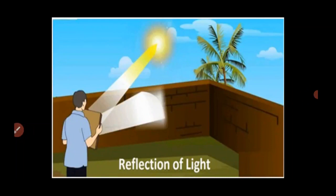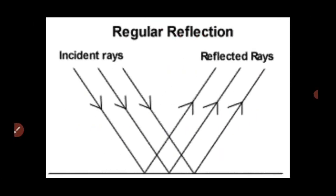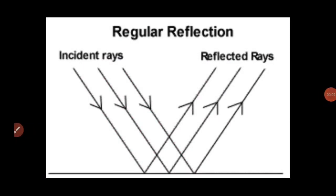Regular reflection: when a beam of light rays falls on a smooth surface, it gets reflected. As seen in this picture, sunlight rays reflect on a mirror giving a complete reflection. After reflection, the reflected rays will be parallel to each other. The angle of incidence and the angle of reflection of each ray will be equal. Hence the law of reflection is obeyed, and a clear image is formed.